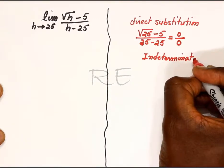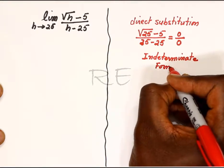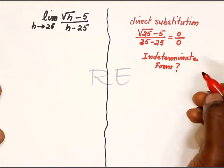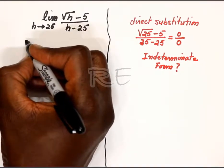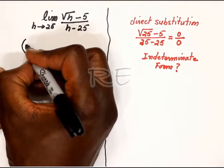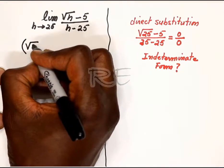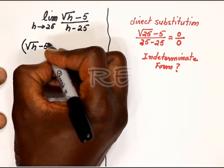This is called an indeterminate form. So now we need to try algebraic manipulation, and what we're going to do is we're going to try multiplying the rational function by the conjugate.